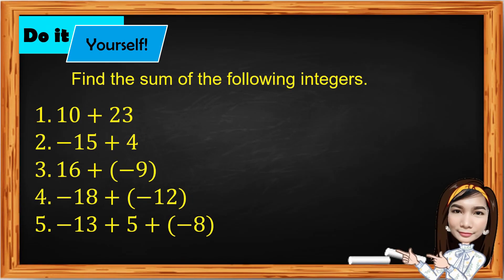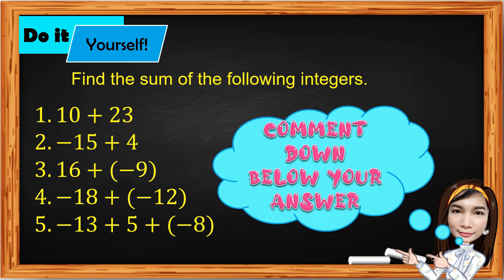Now it's your turn — do it yourself! Find the sum of the following integers. Number 1: 10 plus 23. Number 2: negative 15 plus 4. Number 3: 16 plus negative 9. Number 4: negative 18 plus negative 12. Number 5: negative 13 plus 5 plus negative 8. Don't forget to comment below with your answer. Happy learning!